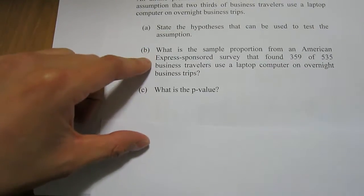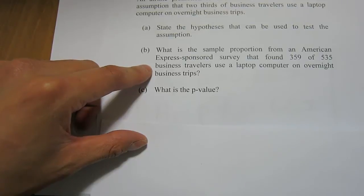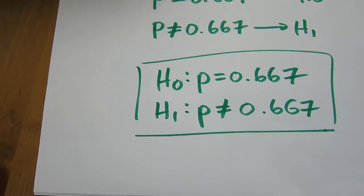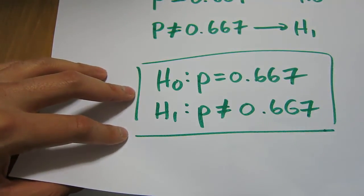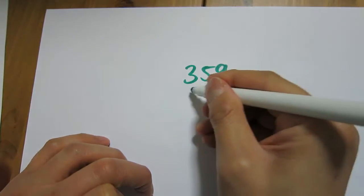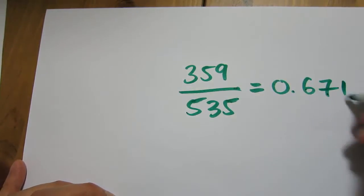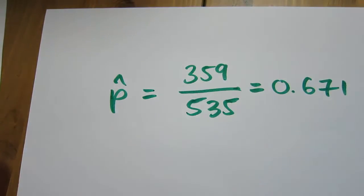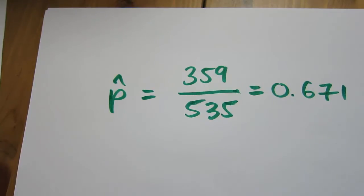Question B: what is the sample proportion from an American Express-sponsored survey that found that 359 of 535 business travelers use a laptop computer on overnight business trips? Remember, the population proportion is what they're assuming — they can't observe every single business traveler, so it's a working assumption. What they did is survey a bunch of people and found that 359 out of 535 used a laptop. If you punch that into your calculator, you get 0.671. We call this P-hat, our sample proportion.